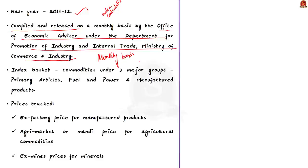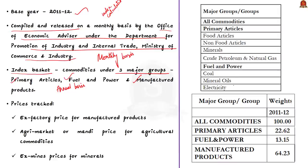When we say 'basket' in economics, it refers to a fixed set of consumer products and services valued on an annual basis. The index basket of WPI covers commodities falling under three major groups: primary articles, fuel and power, and manufactured products. Primary articles are subdivided into food articles, non-food articles, minerals, and crude petroleum and natural gas. Fuel and power is subdivided into coal, mineral oil and electricity. As per WPI requirements, the prices tracked are ex-factory prices for manufactured products, Agri market (Mandi) prices for agricultural products, and ex-mines price for minerals.